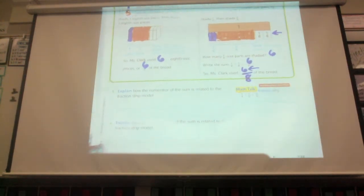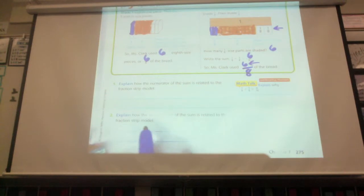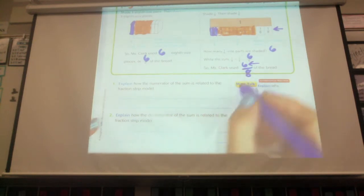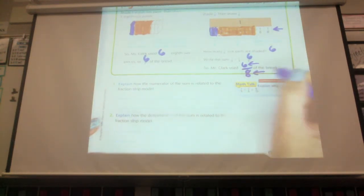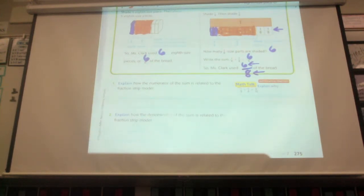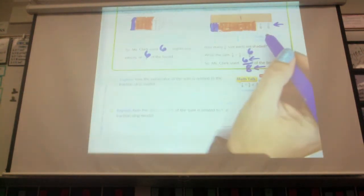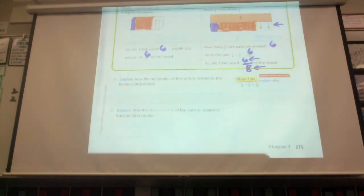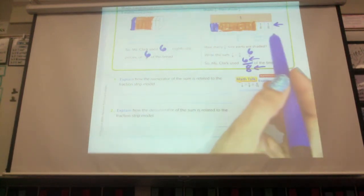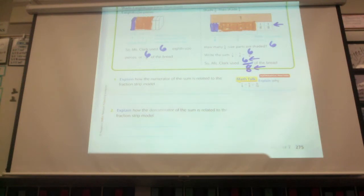Number two. Explain how the denominator of the sum is related to the fraction strip model. So now we're talking about this, and we're talking about this again. Now using the same idea, explain how they're related. Very good. So there's eight pieces all together. They're related because they're the same number. The denominator's eight, and the total pieces are eight.